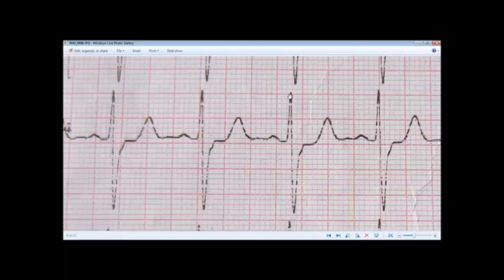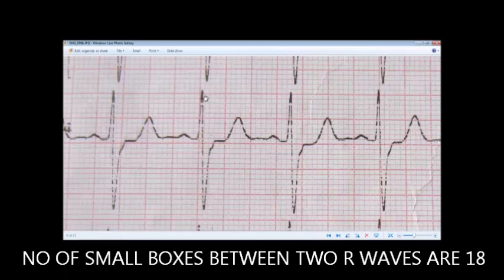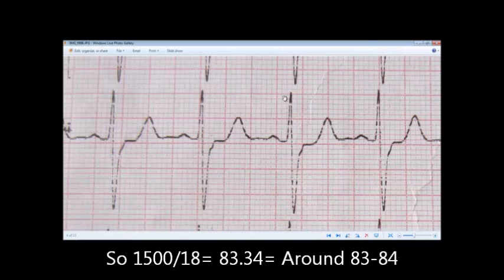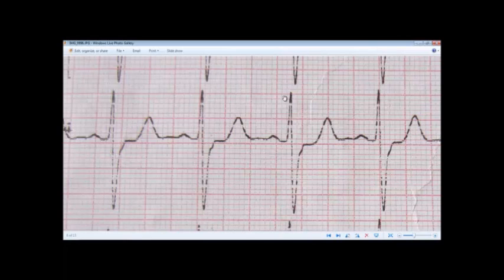The number of small boxes here are 18. So when we divide 1500 by 18, we get around 83.33, that is 84, heart rate of 84.